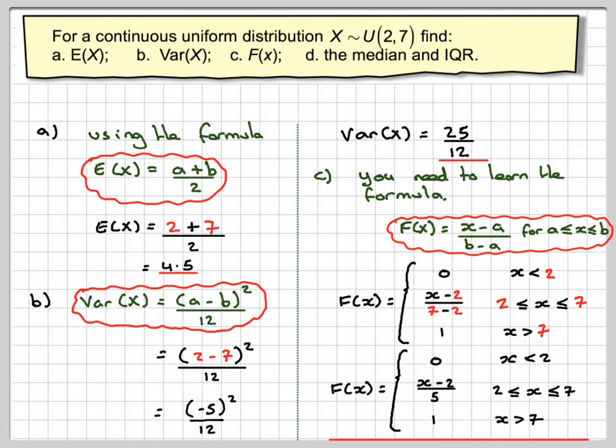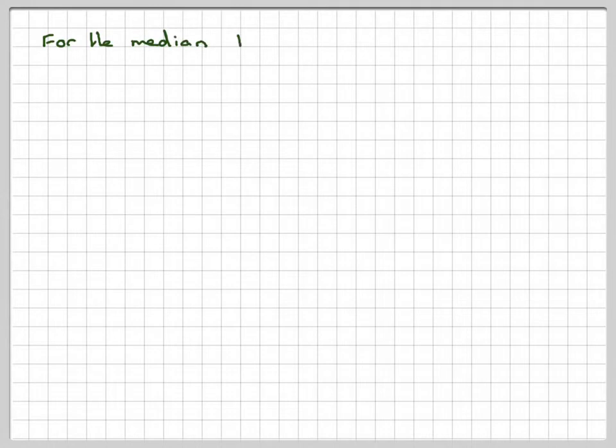Okay, so F(x). Now to find the median. For the median, F(m) is equal to a half. So we take the cumulative distribution function m and put it equal to a half. So we have to solve m minus 2 over 5 is equal to a half.